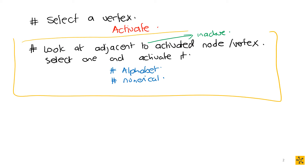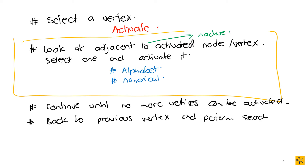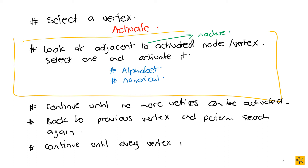You repeat this until you reach a point where you can't go any further. When you reach that point, you backtrack to the previous vertex and perform the search again. Continue this until every vertex in your graph is reached, and once you do that, you have a spanning tree.